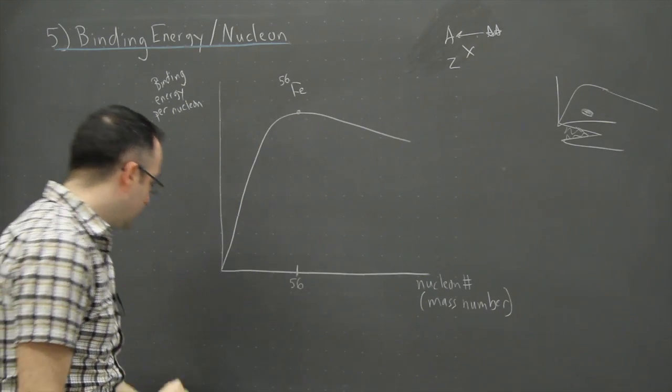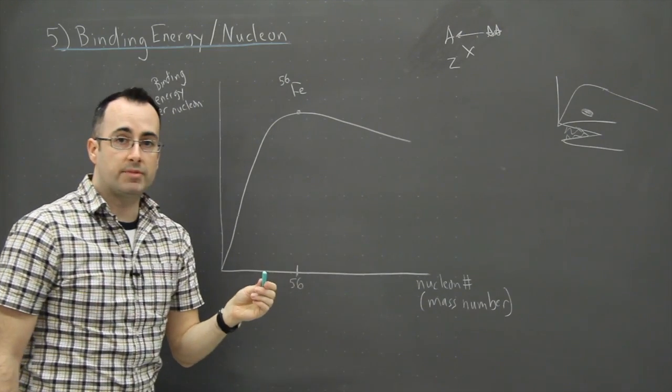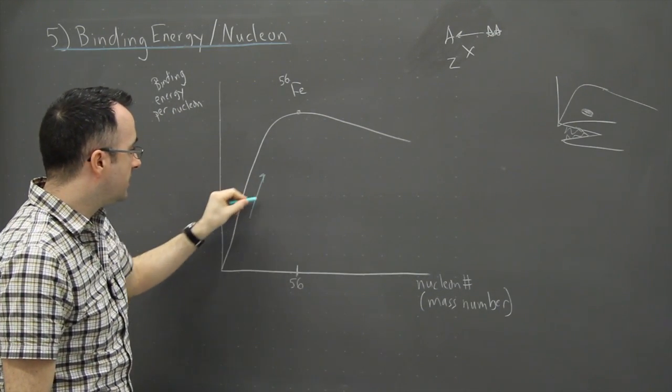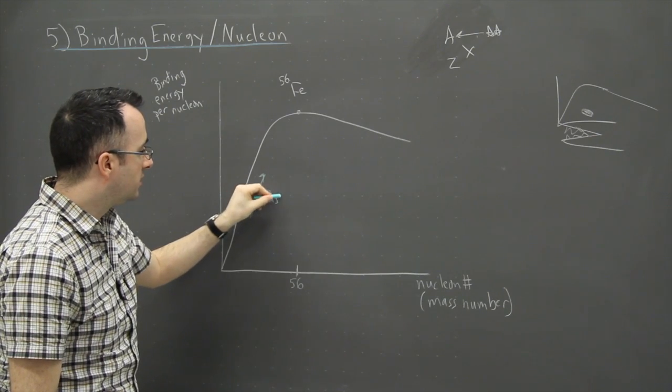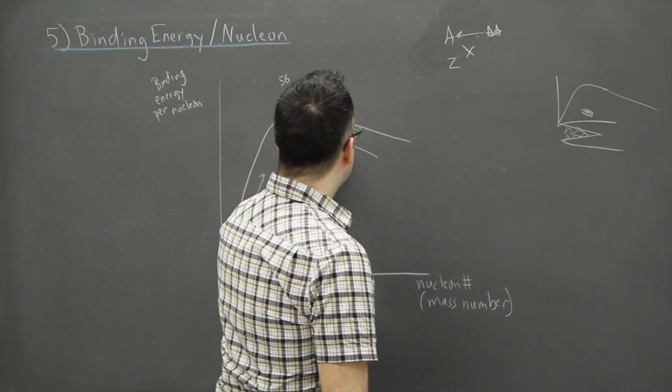And actually this is kind of neat. You'll see in a second that this actually explains some neat things with the sun. So what I'm going to do right now is show you this little curve right here. Draw this and I'm going to say fusion. And over here I'm going to draw this one and say fission.